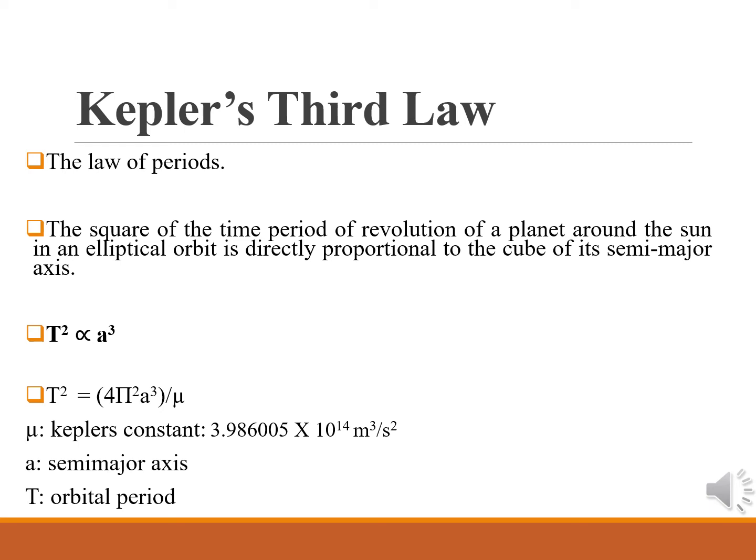Kepler's third law, also called the Law of Periods, states that the square of the time period of revolution of a planet around the Sun in an elliptical orbit is directly proportional to the cube of its semi-major axis. The time taken by a smaller body to complete one revolution around the larger body — the square of that time is directly proportional to the cube of the semi-major axis. The equation is: T² = 4π²a³ / μ, where μ indicates Kepler's constant, a is the length of the semi-major axis, and T is the orbital period.